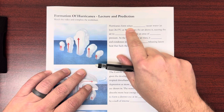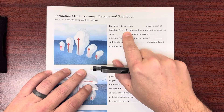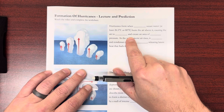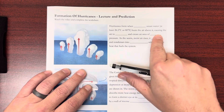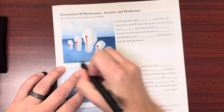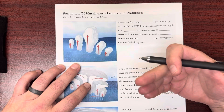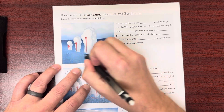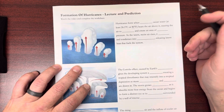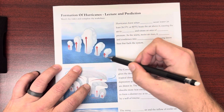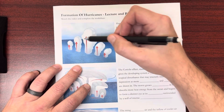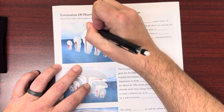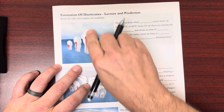Hurricanes form when warm ocean water, at least 80 degrees Fahrenheit, heats the air above it, causing the air to rise and create an area of low pressure. Think tropical waters, because to get it to be 80 degrees is pretty unusual. Warm water makes it easier for water to evaporate, which means you get a lot of warm, moist air. Warm, moist air will rise because of the density difference, and that creates a low pressure system.